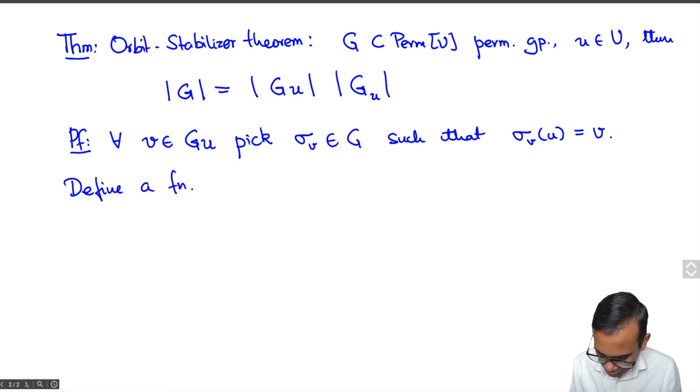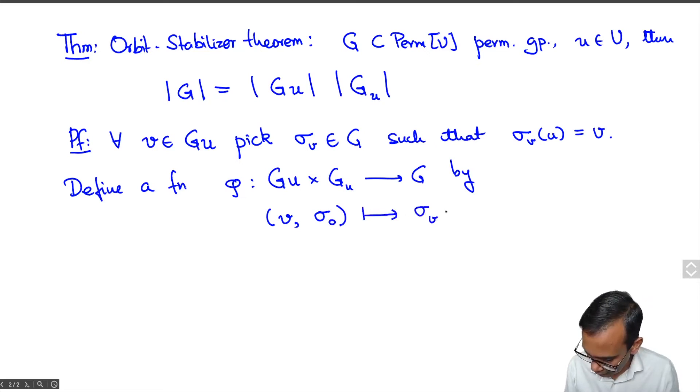using the sigma V. We'll define a function phi from GU cross GU to G by saying that if I take the point V and an element sigma 0 in GU then this should map to sigma V composed with sigma 0. I claim that this phi is a bijection.